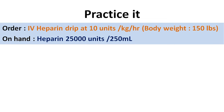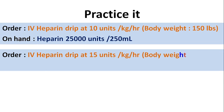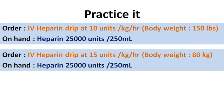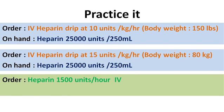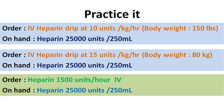Now here are a few examples for you to practice. Mention the answers in the comment box. First: doctor's order is IV heparin drip at 10 units per kg per hour, body weight is 150 lbs — remember to convert lbs to kilogram before applying the formula. Second: IV heparin drip at 15 units per kg per hour, body weight is 80 kilogram, on hand heparin 25,000 units per 250 ml. Third: heparin 1,500 units per hour IV, on hand heparin 25,000 units per 250 ml.